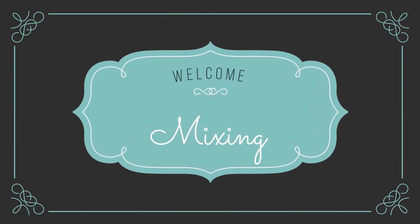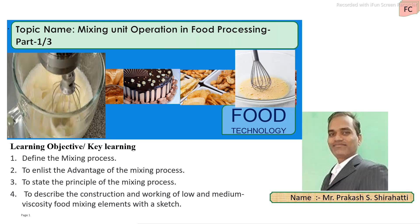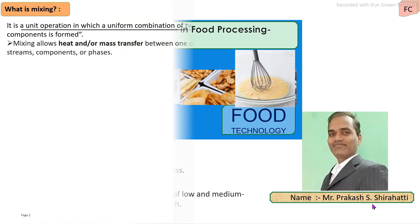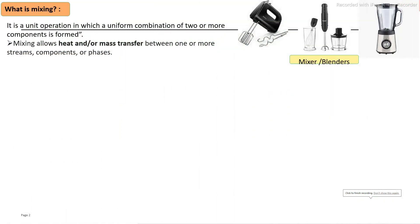In this video discussion you will learn mixing unit operation — the first part — in which you will learn mixing of low and medium viscosity liquids: the mixing elements, their construction, working, and applications. During the preparation of a product, a number of ingredients or raw materials must be mixed to prepare the final product. Mixing is a basic unit operation in which ingredients or raw materials are mixed to prepare different products.